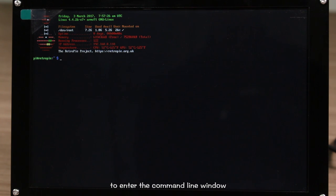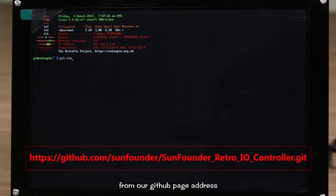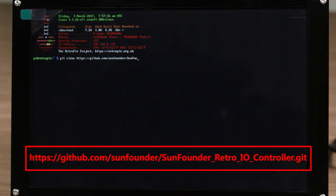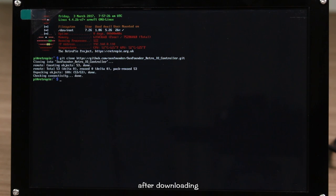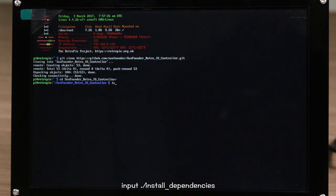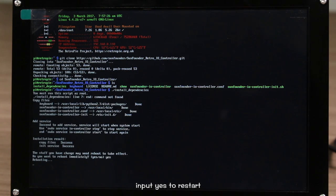Next, press F4 to enter the command line window and install the driver of the joystick. Download our driver package git clone from our GitHub page address. After downloading, type in CD SunFounder and press Tab. It will complete automatically and enter the file. Input dot slash install underscore dependencies. Input yes to restart.